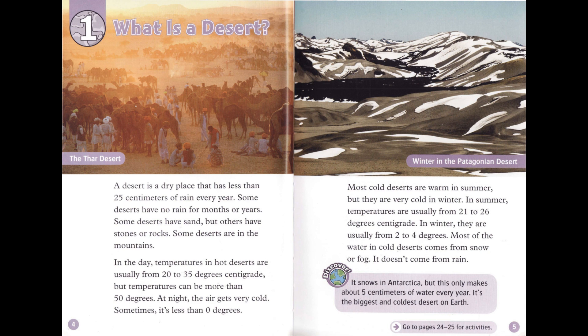Most cold deserts are warm in summer, but they are very cold in winter. In summer, temperatures are usually from 21 to 26 degrees centigrade. In winter, they are usually from 2 to 4 degrees. Most of the water in cold deserts comes from snow or fog — it doesn't come from rain. Discover: It snows in Antarctica, but this only makes about 5 centimeters of water every year. It's the biggest and coldest desert on Earth.